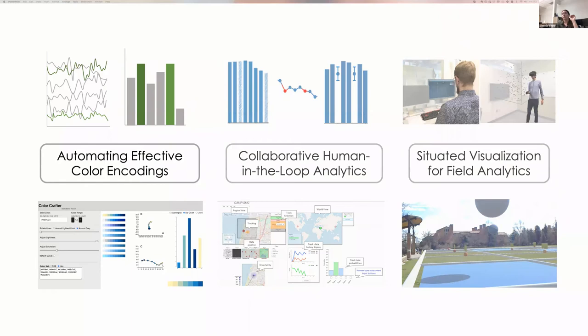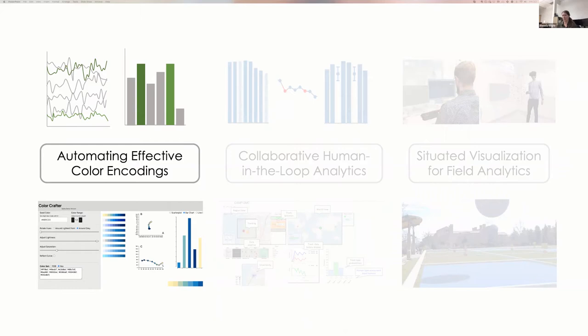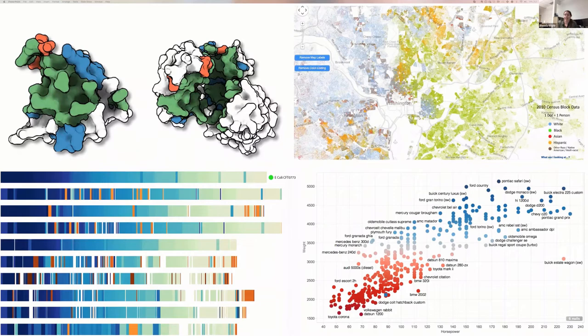Designing effective visualizations is a really tricky problem. Something as simple as choosing the right colors requires understanding how people perceive colors, how the semantics of color align with data, how the relationships between colors highlight key patterns, and also choosing colors that just look good together. Color is amongst the most important and common methods for encoding data.